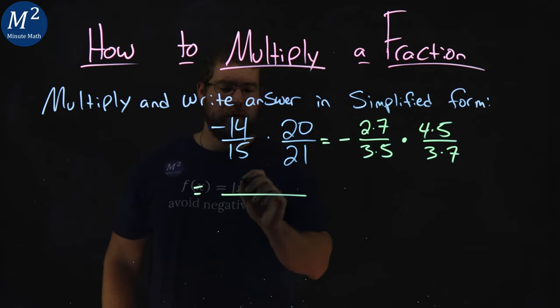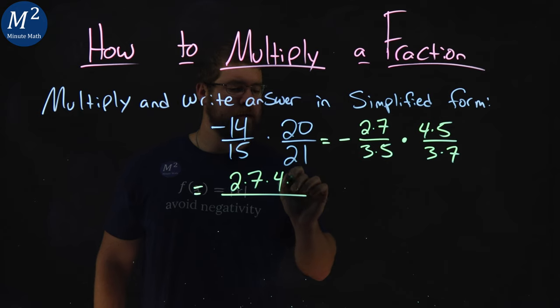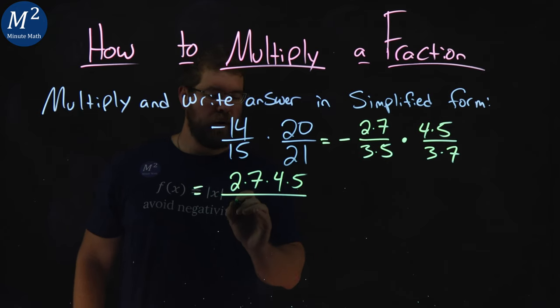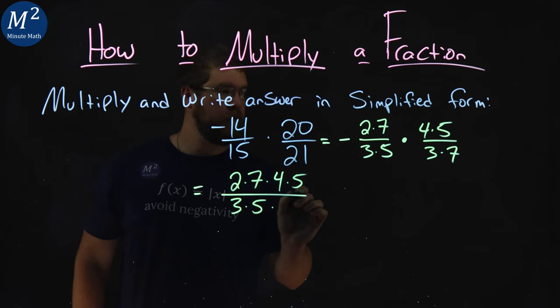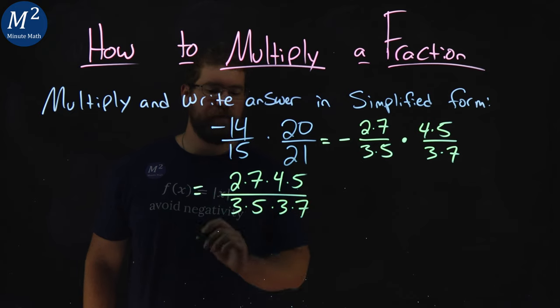I'm left with 2 times 7 times 4 times 5. Denominator, 3 times 5 times 3 times 7. Don't forget that negative.